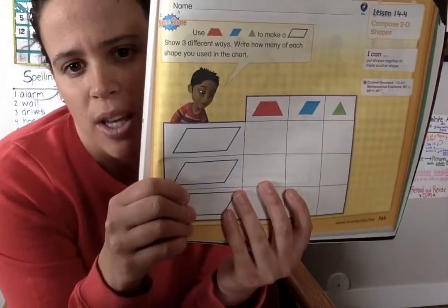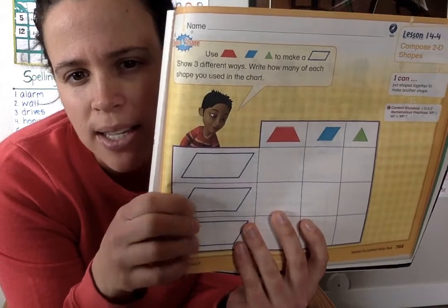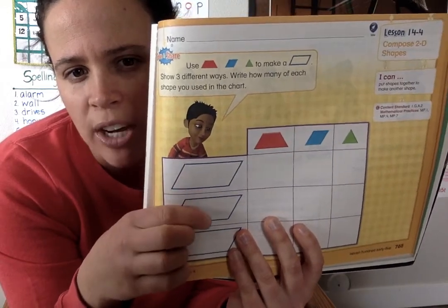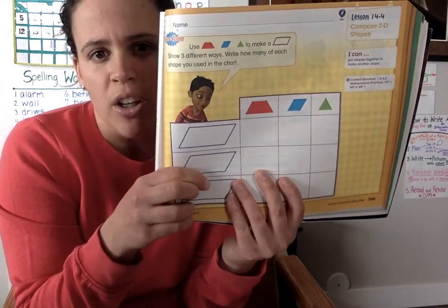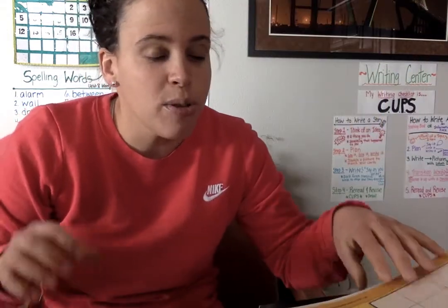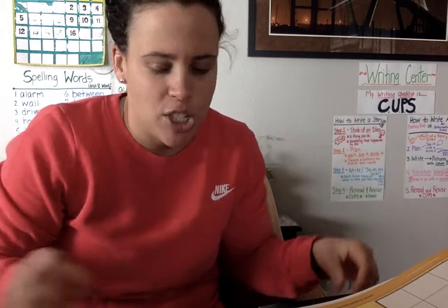So you can either pause it and do it like on the screen, or I'm going to show you another way you can do it. So this is your solve and share using shapes to make that shape.